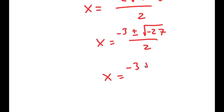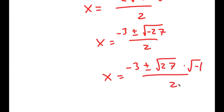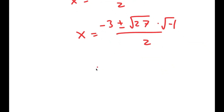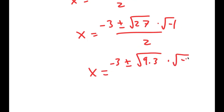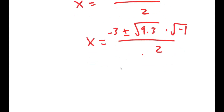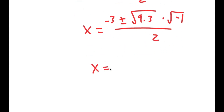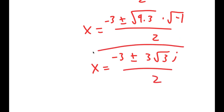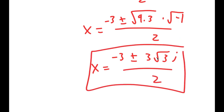Which is equal to negative 3 plus or minus the square root of 27 times the square root of negative 1, over 2. Now 27 is the same thing as 9 times 3, and the square root of 9 is 3, so I get x is equal to negative 3 plus or minus 3 root 3. And the square root of negative 1 is actually equal to the magic number i. So these are two more solutions to this equation.